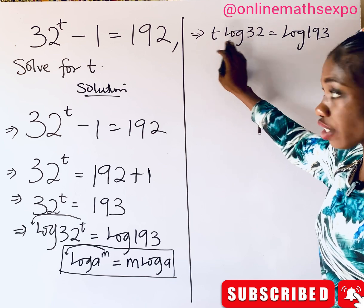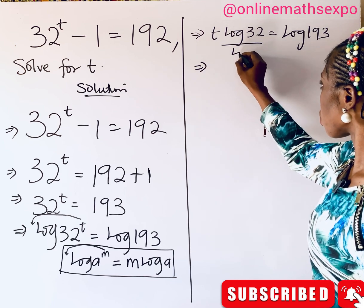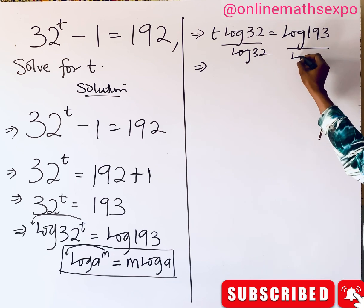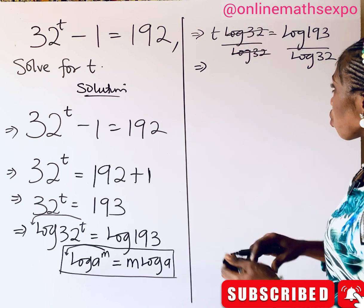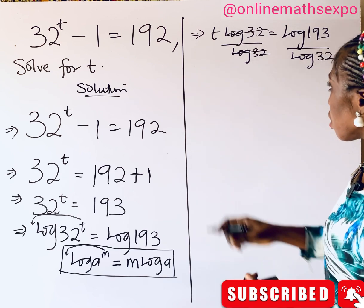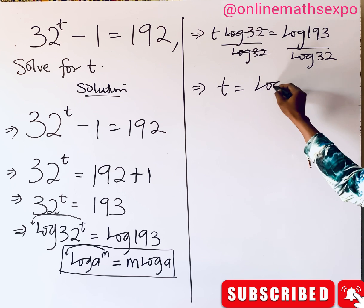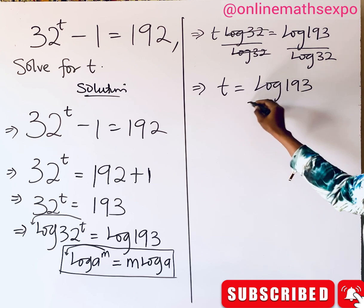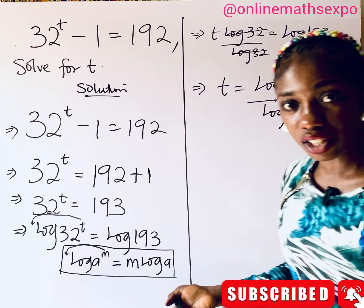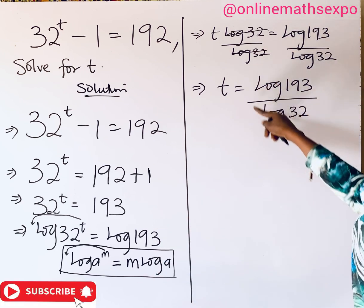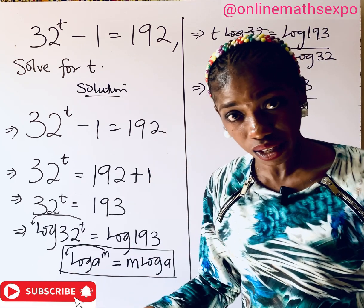To get t, divide both sides by the coefficient of t, which is log 32. This cancels on the left, leaving us with t equals log 193 all over log 32. If you are allowed to use a calculator at this point, you can easily input this and get the value of t in decimals.